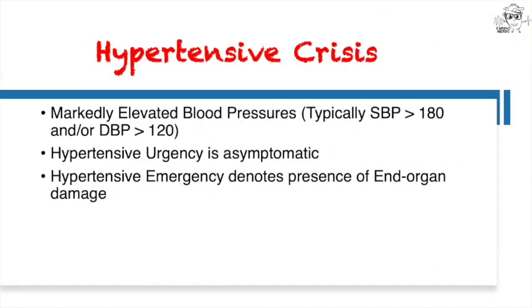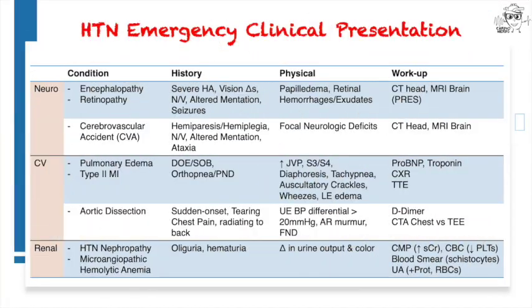Hypertensive crisis occurs in the presence of markedly elevated blood pressures, typically 180 over 120, and can be further divided into hypertensive urgency, which is asymptomatic, or hypertensive emergency, which denotes presence of end organ damage. As a result, when you are presented with a patient with markedly elevated blood pressures, your management will vary based on the presence and severity of end organ damage.